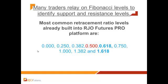The most common retracements are these levels. Now the 50% retracement is not actually a Fibonacci number, but it helps to pay attention when the market pulls back 50%. If the market pulls back between 50% and 62% retracement, it is believed that the market is in the box. If it goes past that, that means there will be a change of direction.